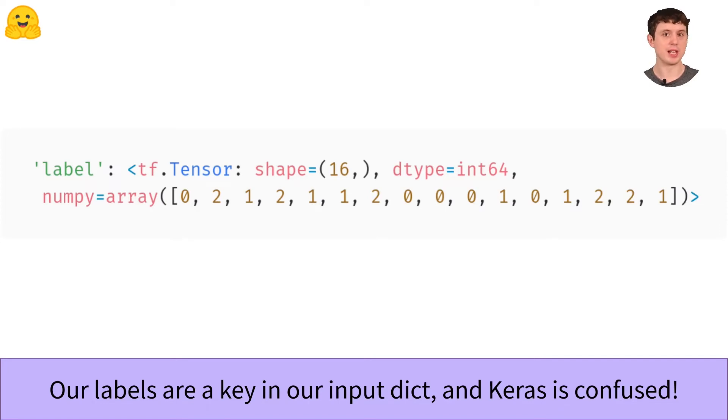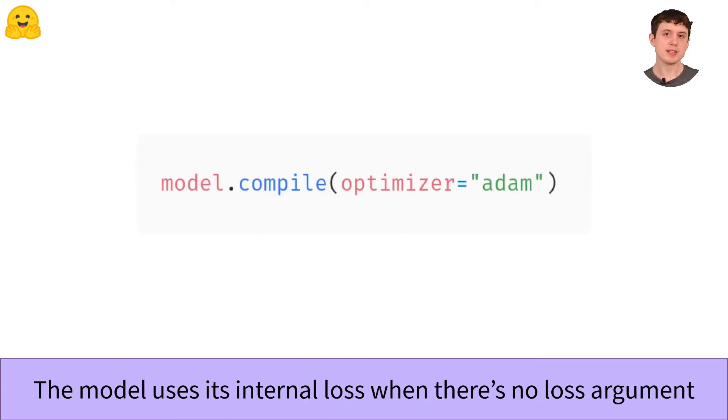This is one of the most common issues you'll encounter when training transformer models with TensorFlow. Our models can all compute loss internally, but to use that loss for training, the labels need to be passed in the input dictionary where the model can see them. This internal loss is the loss that we use when we don't specify a loss argument when we call compile. Keras, on the other hand, usually expects labels to be passed separately from the input dictionary and not to be visible to the model. We need to choose one or the other.